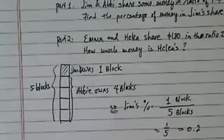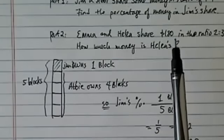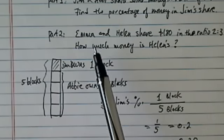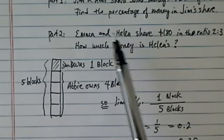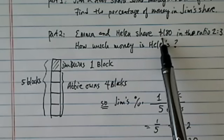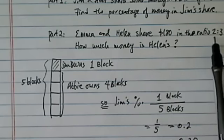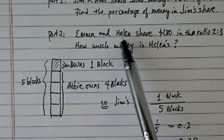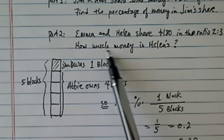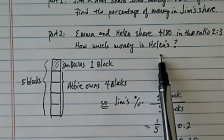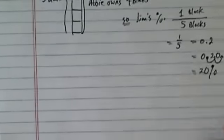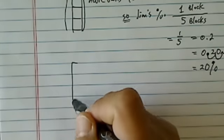Back to math. Part 2, we have a similar problem, but slightly more engaging. Emma and Helen, they share $180 together in the ratio of 2 to 3. Obviously, it looks like Helen is saving more money, and we want to see if Helen wants to take her money out, how much does she have? Let's again go back to our blocks.